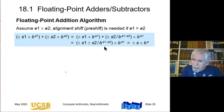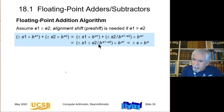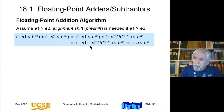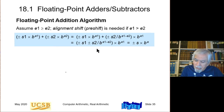However, I may need to perform an adjustment if the computed significand is not within the allowed range, which is 1 to 2 for IEEE floating-point format. So if it's less than 1 or greater than 2, I need to make adjustments.